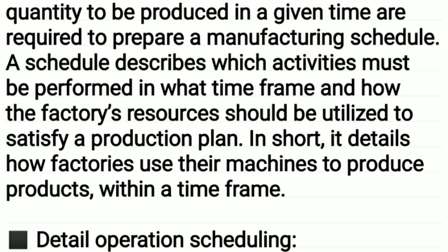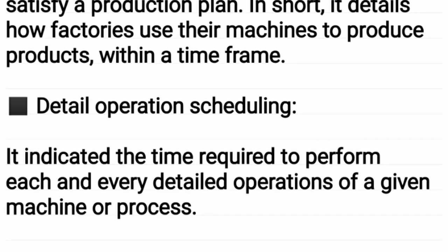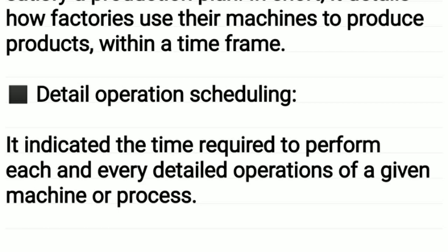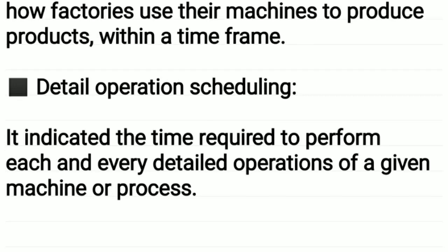A schedule describes which activities must be performed, in what time frame, and how the factory's resources should be utilized to satisfy a production plan. In short, it details how factories use their machines to produce products within a time frame. Detail operation scheduling indicates the time required to perform each and every detailed operation of a given machine or process.